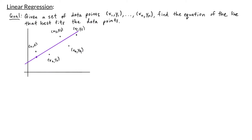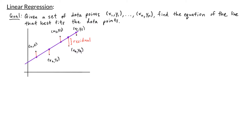For each of the x values in our data set, we have a corresponding point on our line. The distance between the data points and their corresponding point on the line is called the residual. When we say we want a line that best fits our data, we want to minimize these residuals. Specifically, if we want a least-squares regression line, we want to minimize the sum of the squares of the residuals.